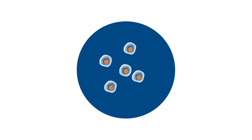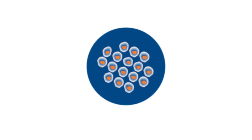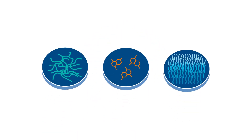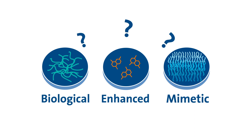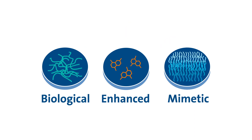When choosing a cell culture surface, it's important to provide ideal growth conditions. There are three surface types: biological, enhanced, and mimetic.